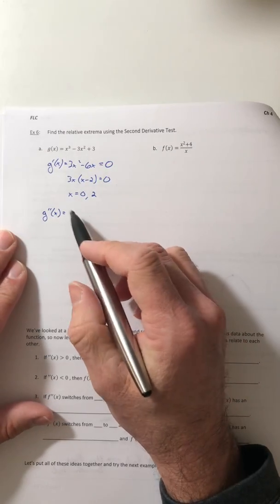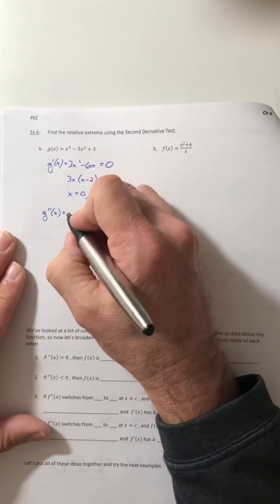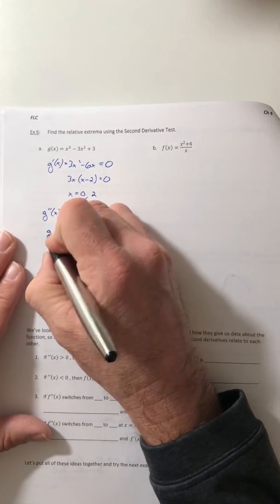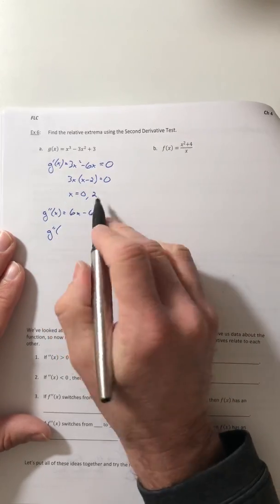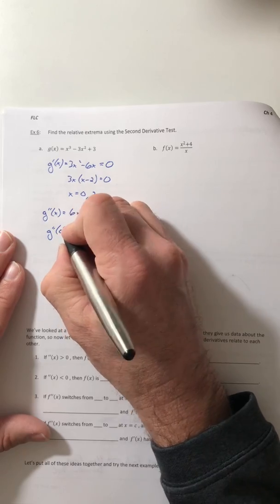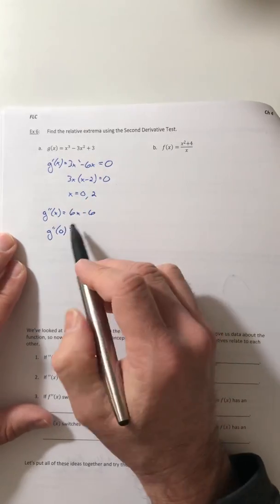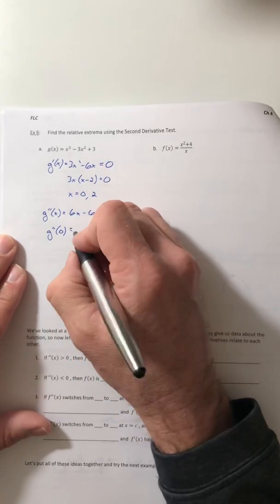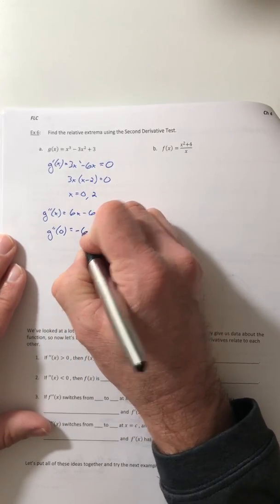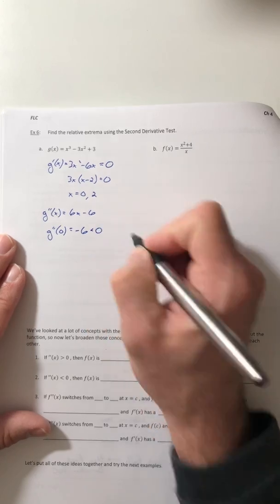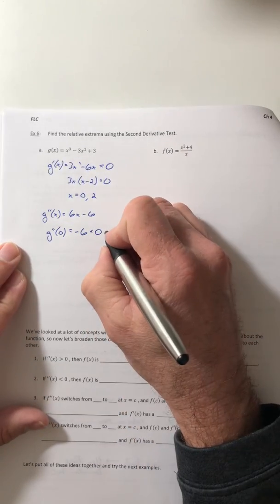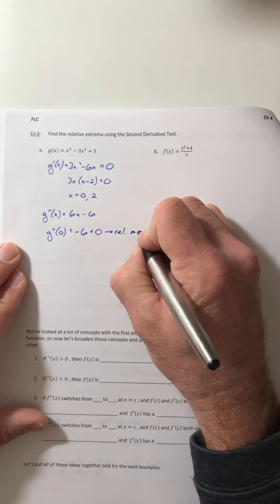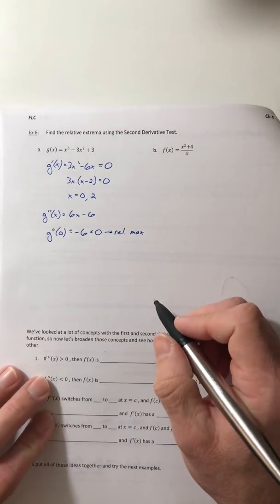So we're going to test them in the second derivative. So the second derivative is 6x minus 6, so we're going to plug in these numbers one at a time. So when x is zero, it comes out as negative 6, so that's negative, so that means that you've got a relative max.